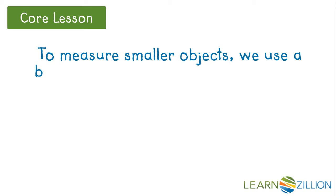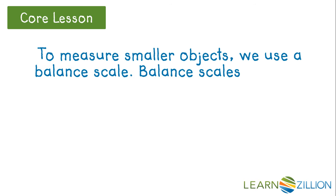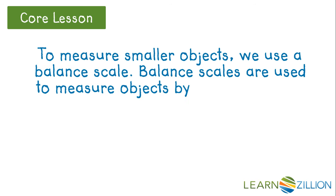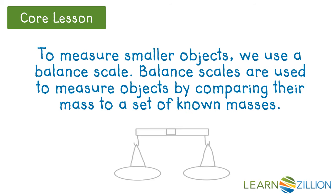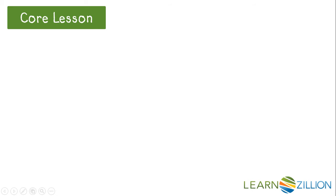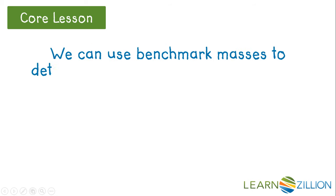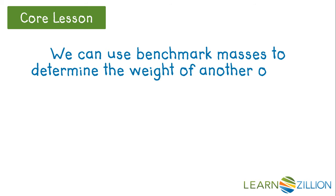To measure smaller objects, we use a balance scale. Balance scales are used to measure objects by comparing their mass to a set of known masses. We can use benchmark masses to determine the weight of another object. Known weights have a mass that everyone in the world has agreed on. These known weights are also called standard weights because they would be standard no matter what city, state, or country you are in.